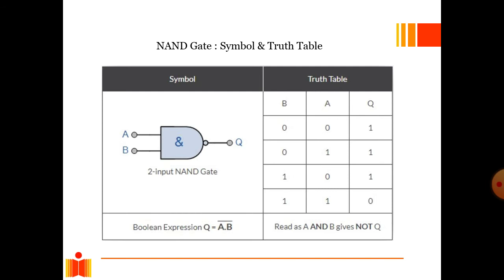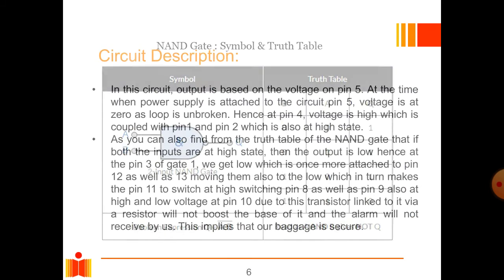So in NAND gate, when any of the input states or both the input states go to the low state in the NAND gate, then the output will be high. And if both the inputs are at high state, then the output will be low state.